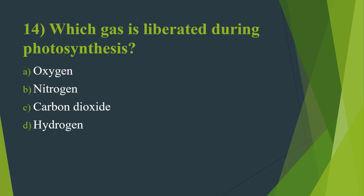Fourteenth question: Which gas is liberated during photosynthesis? Option A, Oxygen. Option B, Nitrogen. Option C, Carbon Dioxide. Option D, Hydrogen. Answer is Option A, Oxygen.